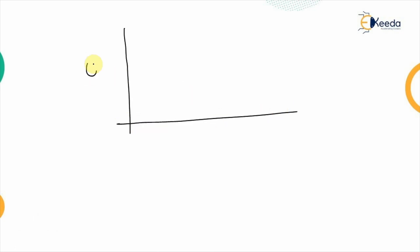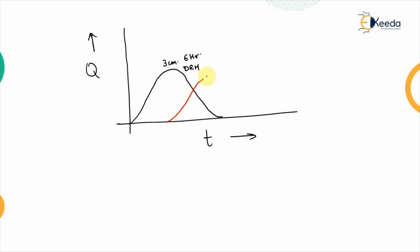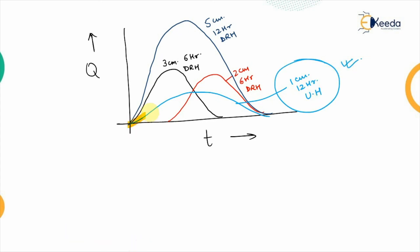Plotting discharge versus time: the 3 cm 6-hour DRH occurred first; once it stopped, the 2 cm 6-hour DRH was added. Their combination yielded the 5 cm 12-hour direct runoff hydrograph, and dividing by 5 gave the 1 cm 12-hour unit hydrograph — which was the desired result.